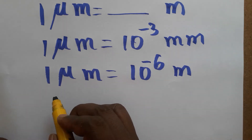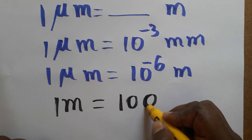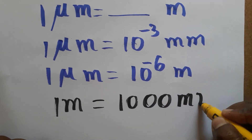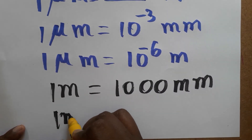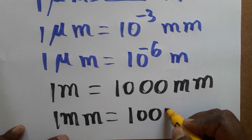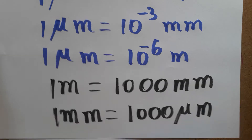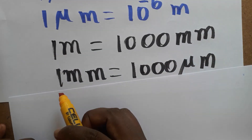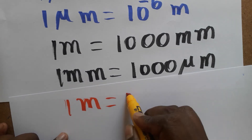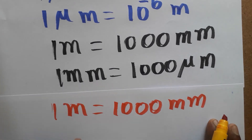We know one meter is a thousand millimeters. And one millimeter is equal to a thousand micrometers. So one meter equals one thousand millimeters, and one millimeter equals one thousand micrometers.